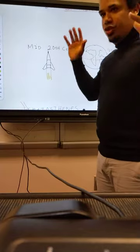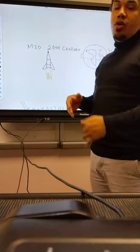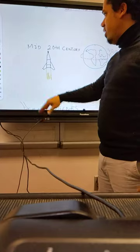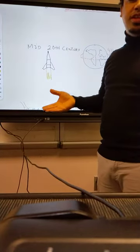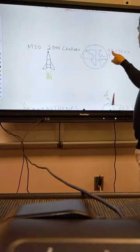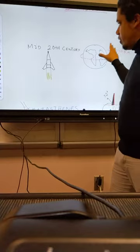We figured out the circumference of the planet just recently in the mid-20th century. It was around 40,030 kilometers.